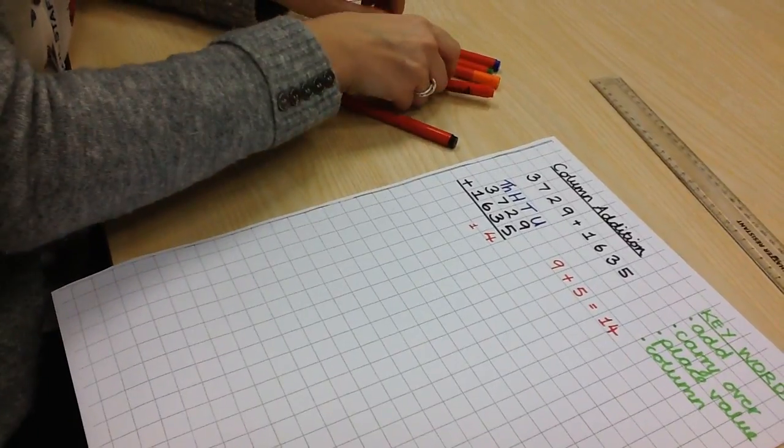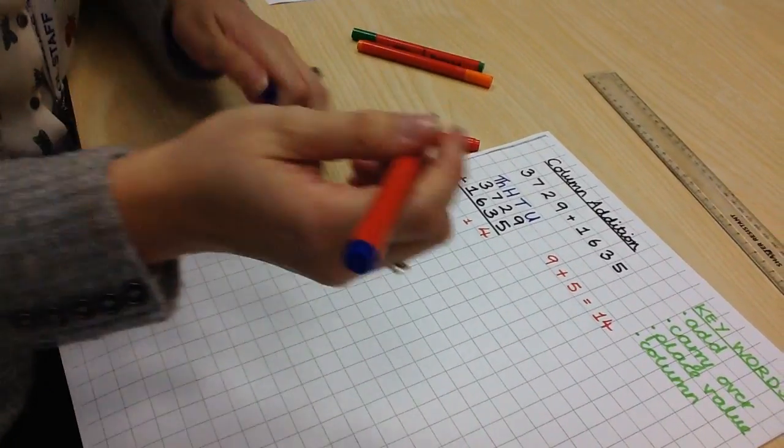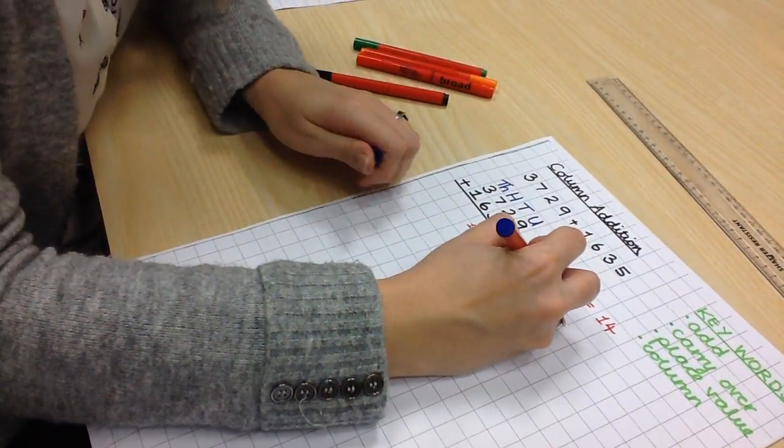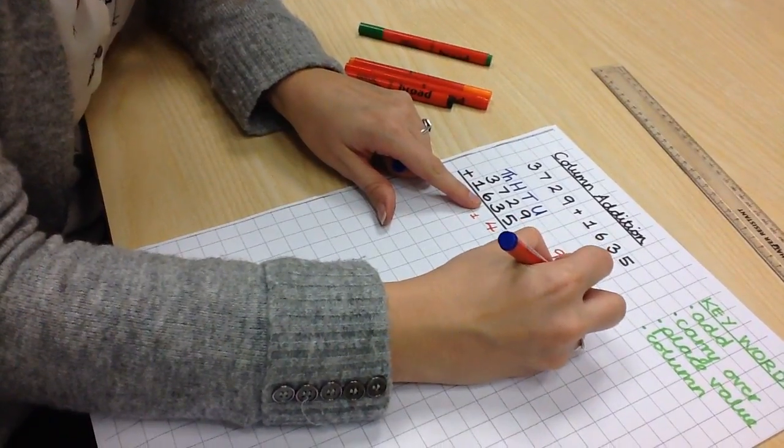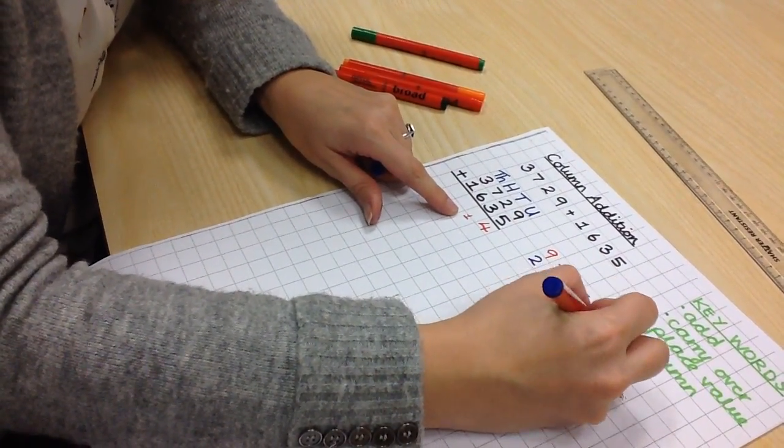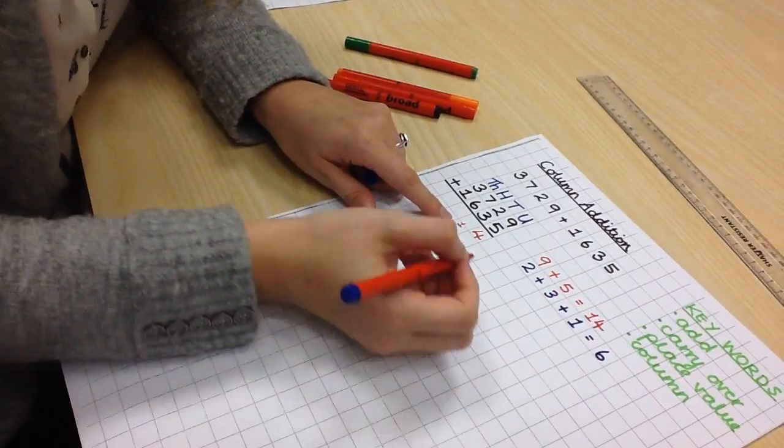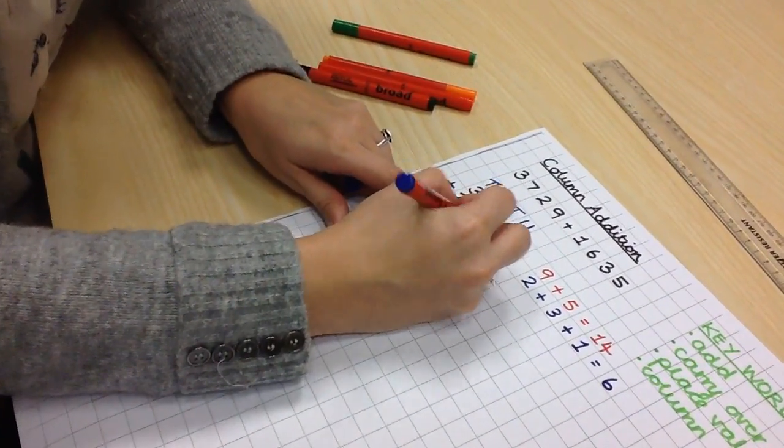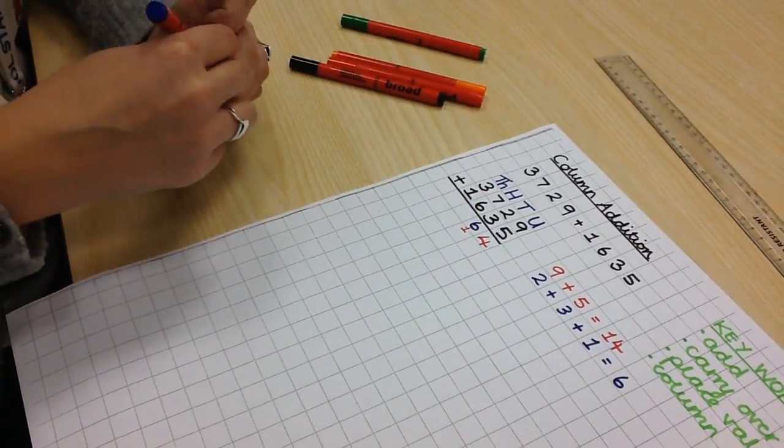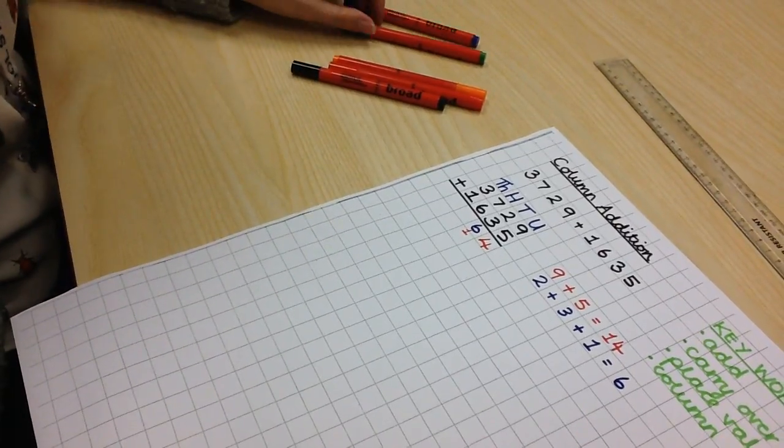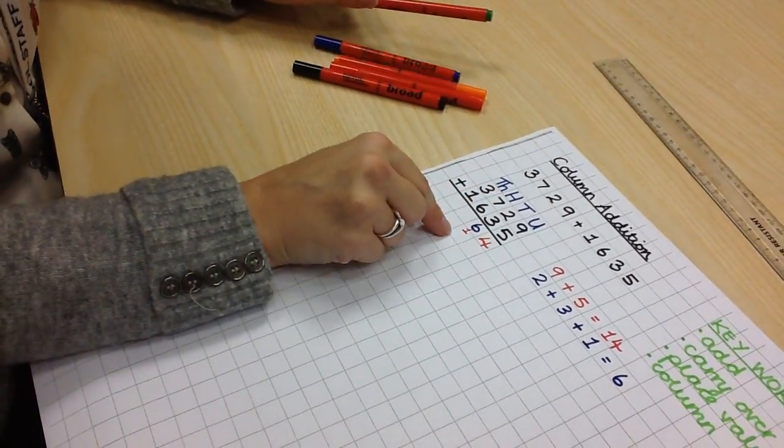Then we add the numbers in the tens column. So, 2 add 3 add the carried over 1 equals 6. We write this 6 in the tens column. We understand that it actually represents 60. 20 plus 30 plus 10 is 60.